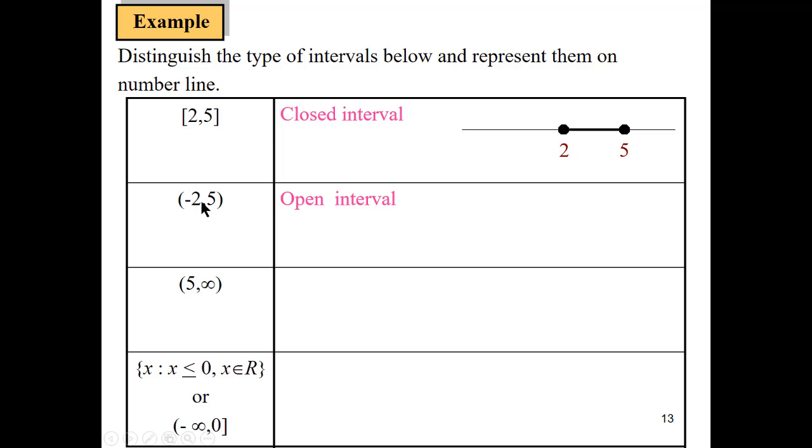Next we have open intervals with round brackets from negative 2 until 5, and it's not included. So the circle is an empty circle because negative 2 is not included, and also 5 is not included.